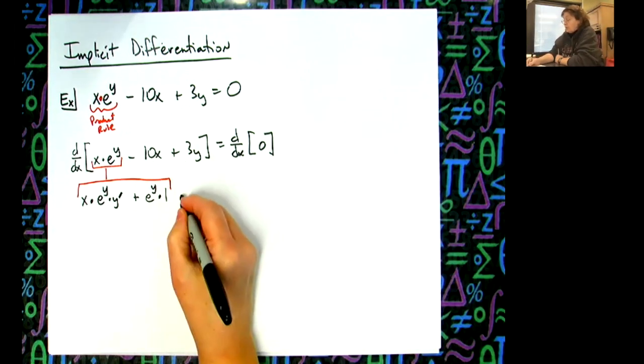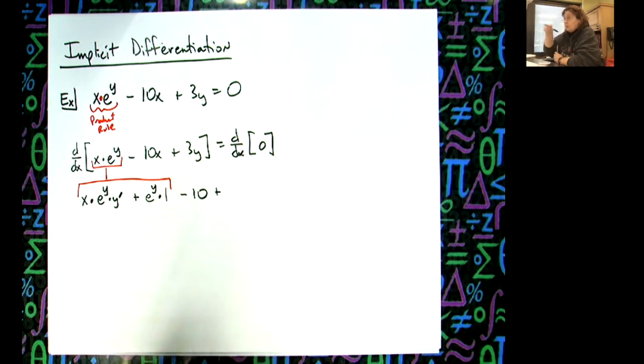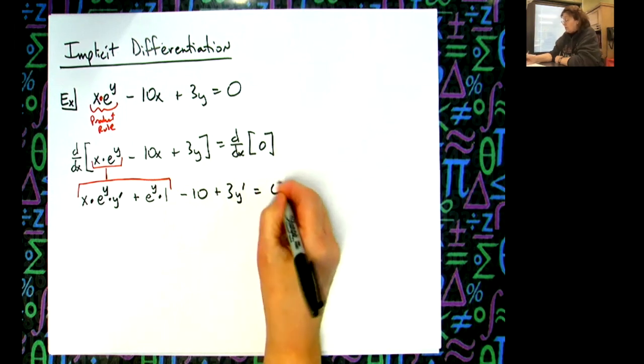All of that right there was the product rule that came from that. Now let's just go ahead and take the derivative there, which will be a minus 10. Derivative here would just be a 3, and then because it's got a y in there you're slapping in that y prime. Is equal to zero.